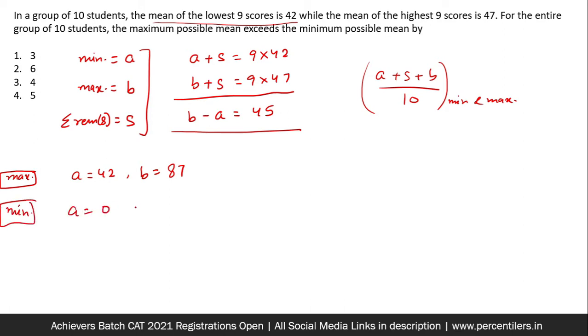And in the minimum possible case, A could be 0. And in that case, you know, B would be 45. Okay, but we know that since the average of the highest 9 scores is 47, the highest score cannot be less than 47. So I'm going to take this as 47. And accordingly, this would be 2.